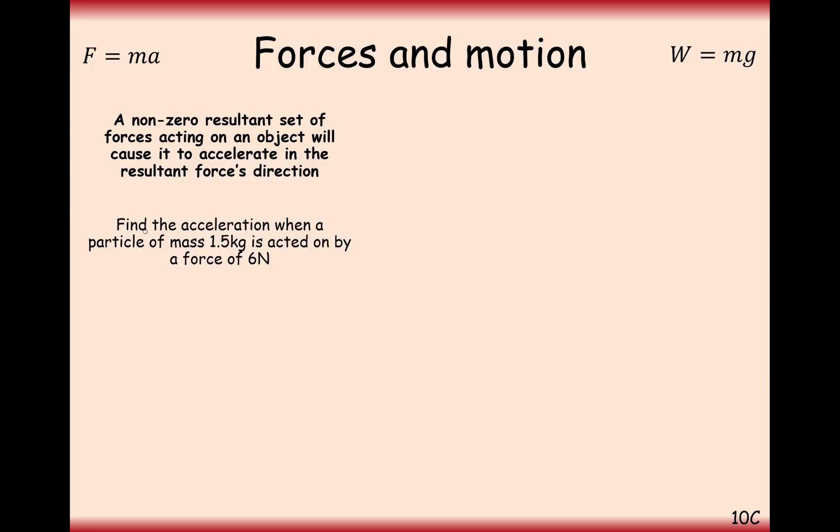Another small question here. Find the acceleration when a particle of mass 1.5 kilograms is acted on by a 6 Newton force. Set up your F equals ma, substitute in your numbers, you've got 6 Newton force, 1.5 is your mass, so you get A as 4 meters per second squared. Remember your units here. Force is in Newtons, mass is in kilograms, and if it's in grams you need to convert it into kilograms, and acceleration is in meters per second squared.